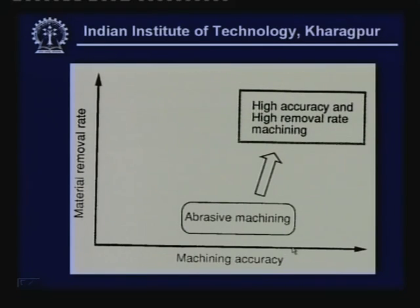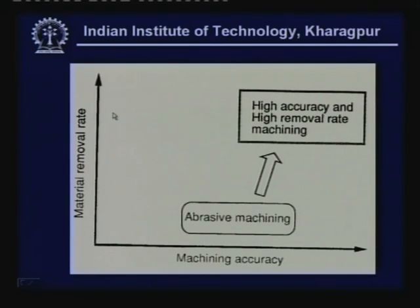Looking at the basic objective of machining, on one side we want material removal rate, and on the other side we want machining accuracy. Various processes can provide either material removal rate or machining accuracy.